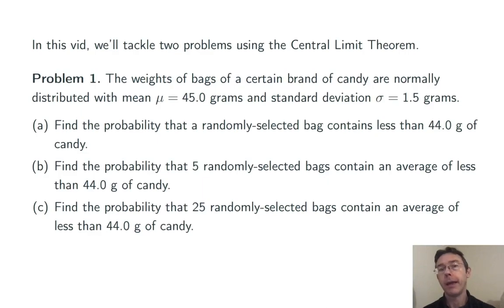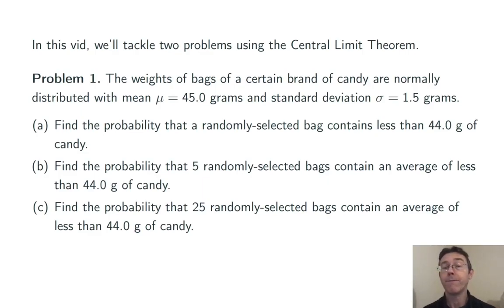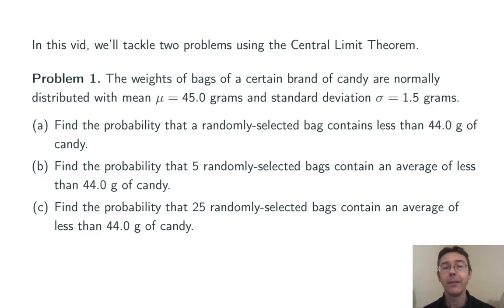The weights of bags of a certain brand of candy are normally distributed with mean 45 grams and standard deviation 1.5 grams. Find the probability that a randomly selected bag contains less than 44 grams of candy. Then find the probability that 5 randomly selected bags contain an average of less than 44 grams, and then that 25 randomly selected bags do.